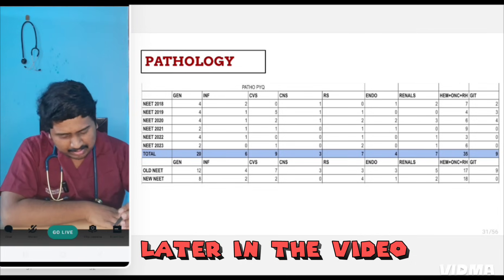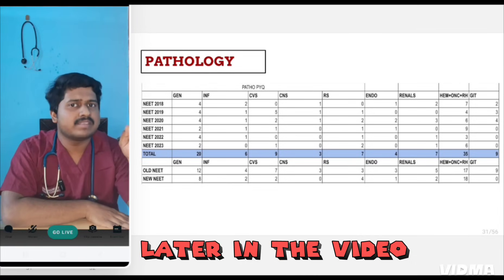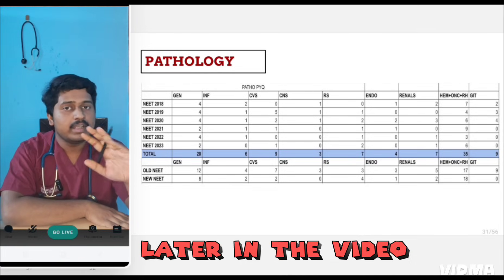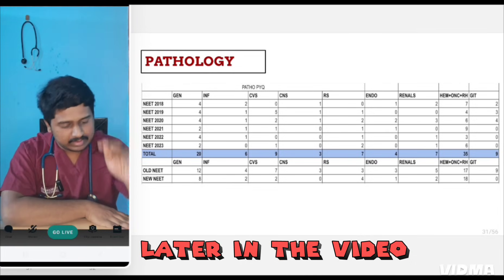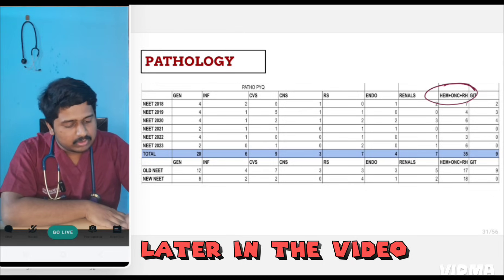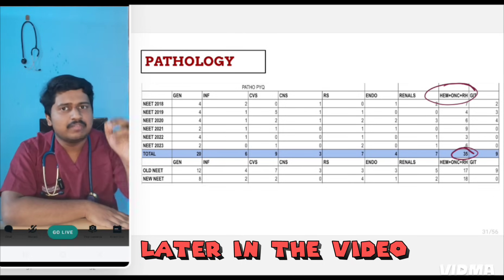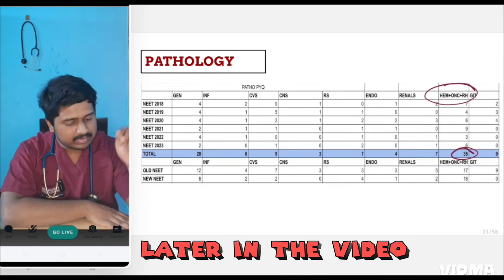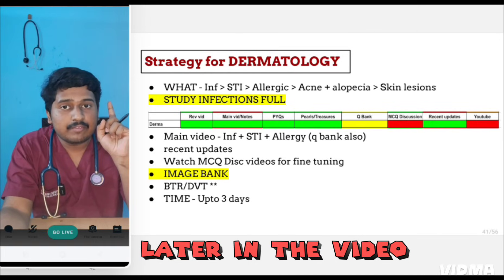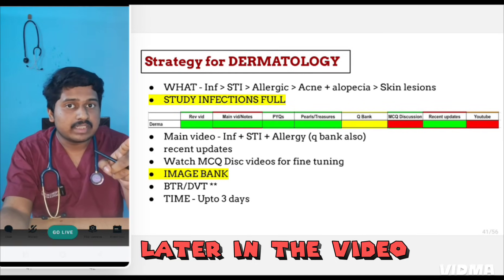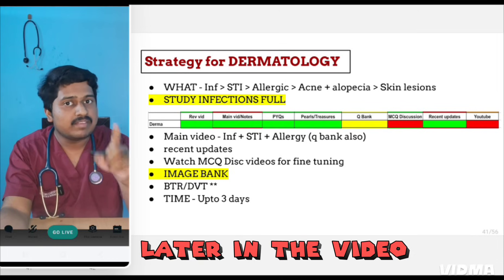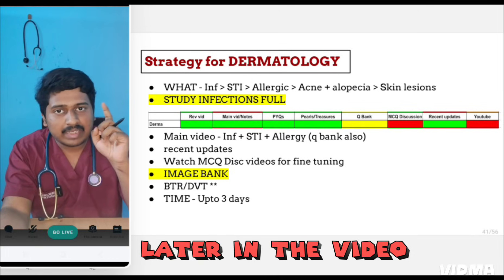In pathology, the maximum number of questions are not asked from general pathology; as against INICT, maximum number of questions are asked from hematology, oncology, and rheumatology. Rheumatology contribution is very little, but hematology — maximum number of questions are asked. If you're starting from papulosquamous disorders, you're making a big mistake, because it is very difficult to study that, and the number of questions asked is also very less.